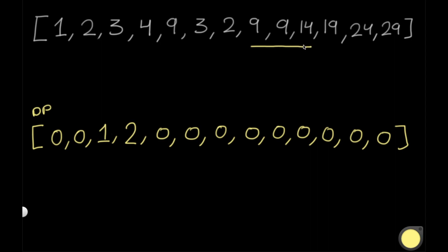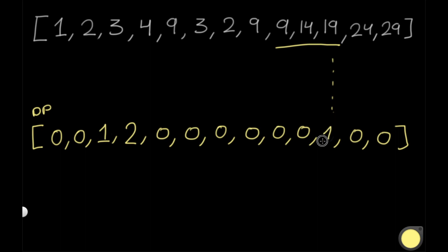Now we have 9, 14, 19. In this case, we do have an arithmetic sequence because 9 plus 5 gives us 14, and 14 plus 5 gives us 19 — the difference is the same. Since the previous DP element is 0, there's nothing from a previous slice being accounted for in this new slice. So we add 0 plus 1, and this position in the DP array now has a value of 1, saying we have one arithmetic slice currently.